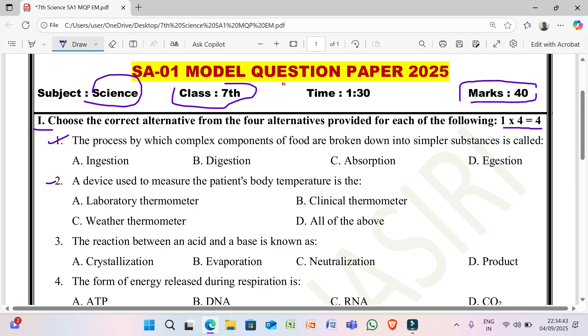2nd one, a device used to measure the patient body temperature is the: A option laboratory thermometer, B clinical thermometer, C weather thermometer, D all of the above.